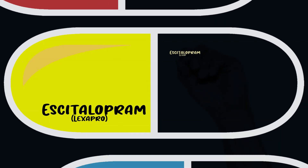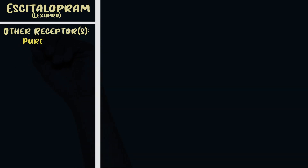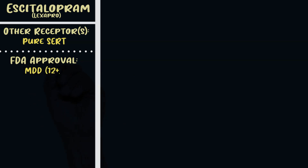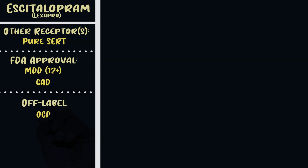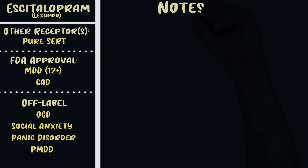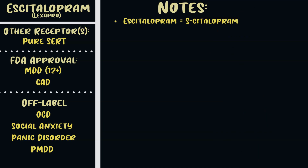The next antidepressant is escitalopram, or Lexapro. The other receptors it hits are basically none — it's essentially the purest SSRI, just hitting SERT. It's FDA approved for depression including children over 12 and for generalized anxiety disorder, and used off-label for OCD, social anxiety, panic disorder, and PMDD.